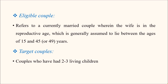Next is the term 'eligible couple.' An eligible couple refers to a currently married couple — we are not considering couples who stay together but are not married, or those living in. So it is a currently married couple wherein the wife is in the reproductive age group, which is 15 to 49 years of age. In some books or articles you may find it stated as 15 to 45 years, but it is better to say 15 to 49 years.